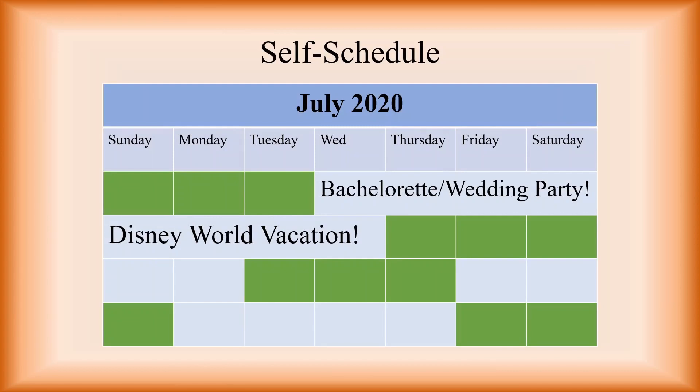Here's another example of a self-schedule. This is nice because you can request which days you want to work. You can kind of move days around and have a nice eight-day stretch off without using PTO.